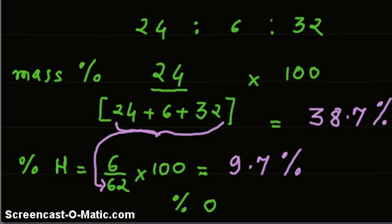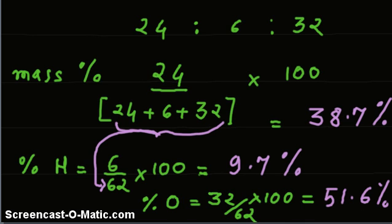Oxygen is equal to 32 divided by 62 times 100, which is equal to 51.6%.